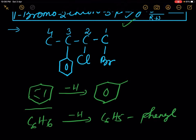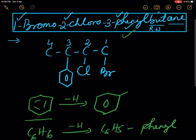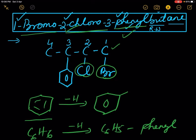In the above structure, Bromine is bonded to carbon 1, Chlorine is bonded to carbon 2, and the Phenyl group is bonded to carbon 3.